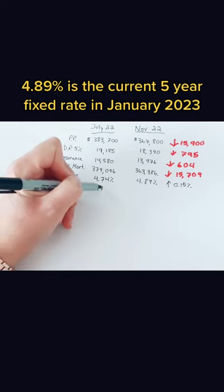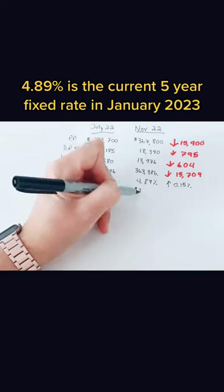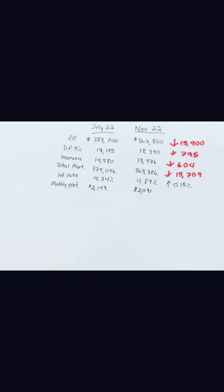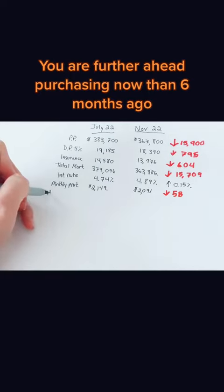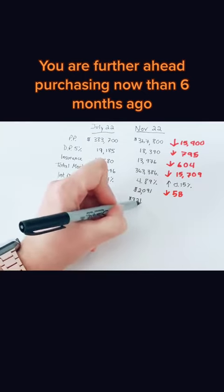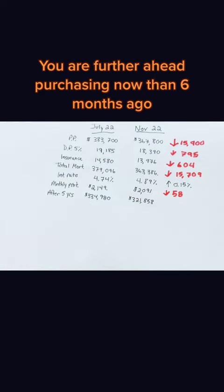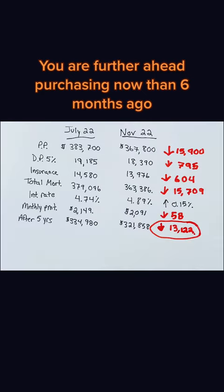Your monthly mortgage payment if you purchased six months ago would be $2,149 compared to now at $2,090. Today you're paying $58 less per month. Your mortgage balance at the end of the five-year term would be $13,122 less.